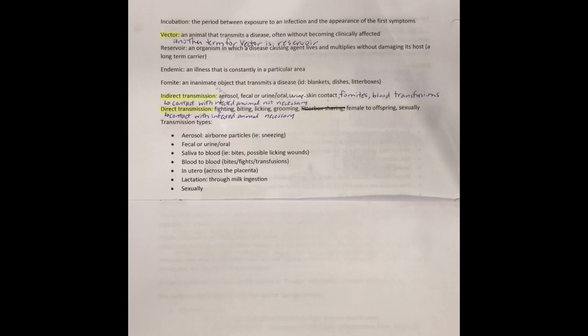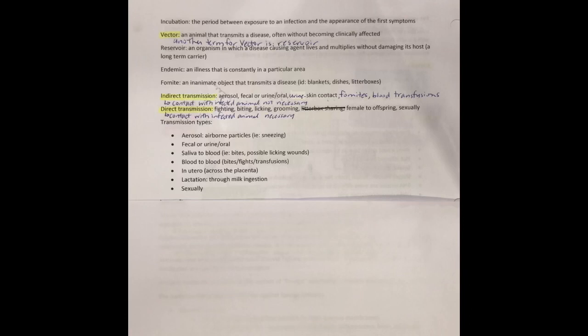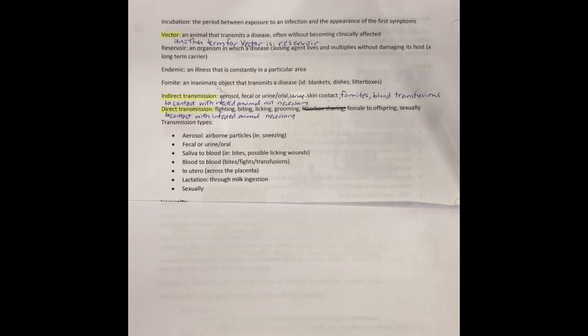And then lactation — where puppies or kittens pick up the illness through milk ingestion. Some things pass through the milk and some things don't, it depends on the illness. And then lastly, sexually — just as humans have STIs that they can catch, so do animals.